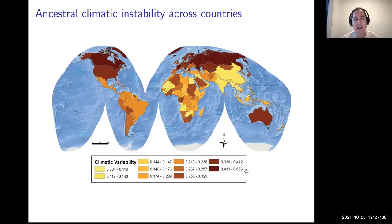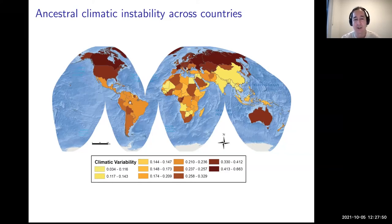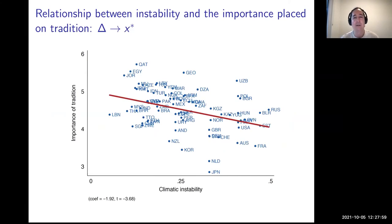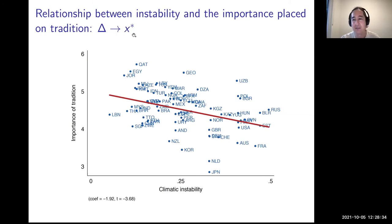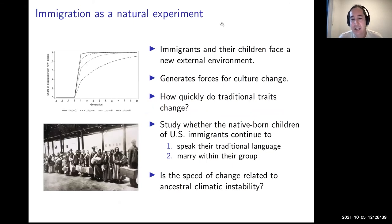This tells us, for example, how much temperature varied from generation to generation among the ancestors of people living in France or Brazil — where many ancestors came from Portugal. Using the World Values Survey, which has information on how important tradition is to people, we find that where the environment was historically more unstable, people report it's less important to adhere to or pass on the traditions of their ancestors. This maps the prediction from delta to x-star in the Rogers model.